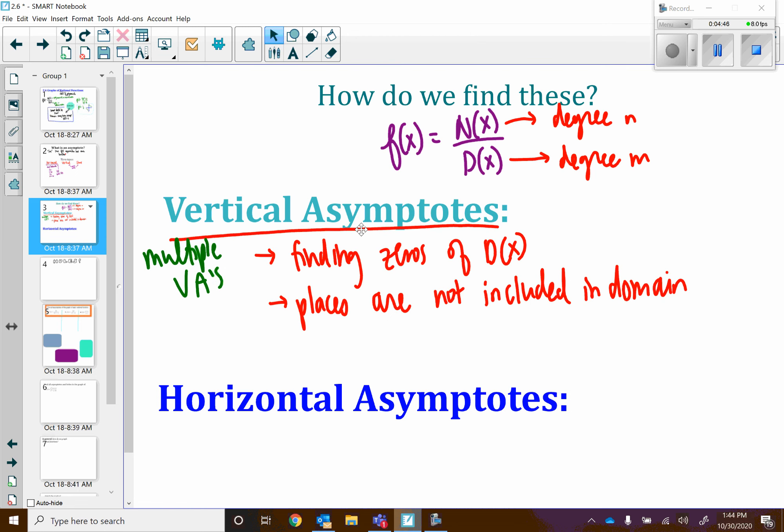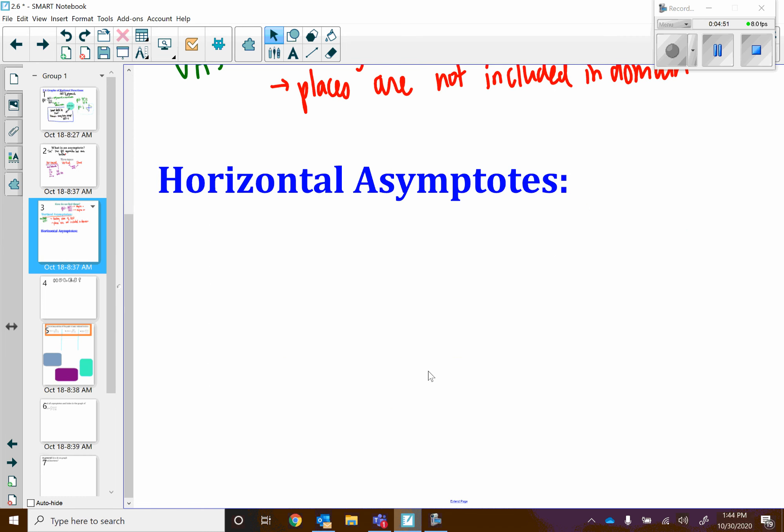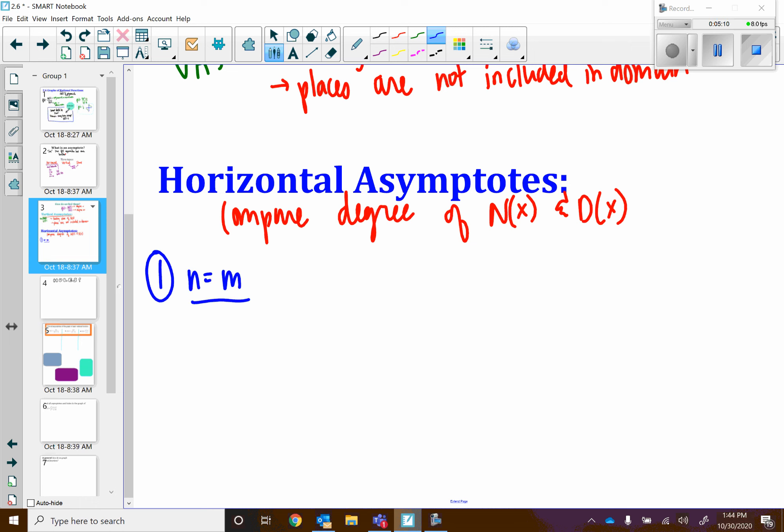Horizontal asymptotes are slightly more complicated. For horizontal asymptotes, you are going to compare the degree of your numerator and denominator. So there's three options here. Either the degrees will be the same, n is equal to m, the numerator will have a smaller degree than the denominator, or the numerator will have a greater degree than the denominator.